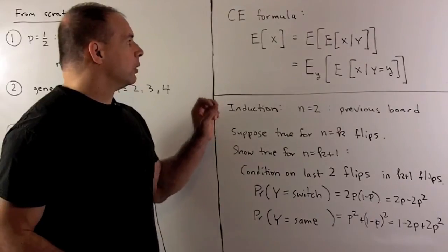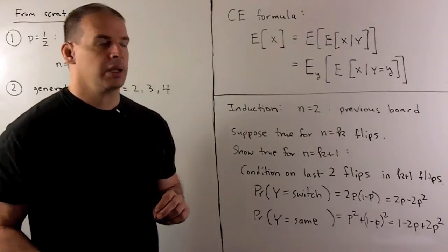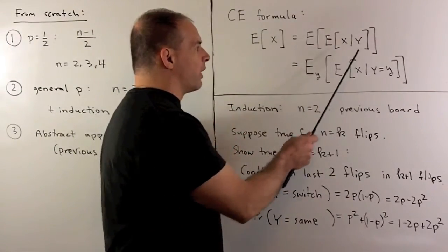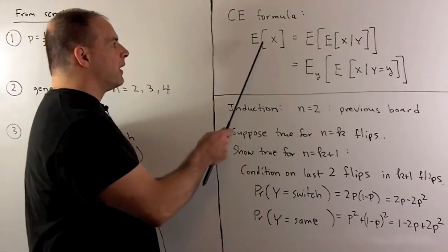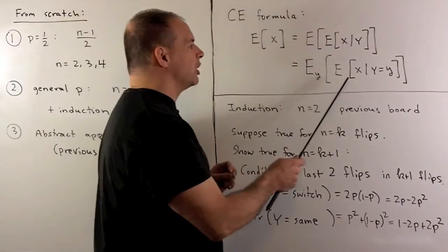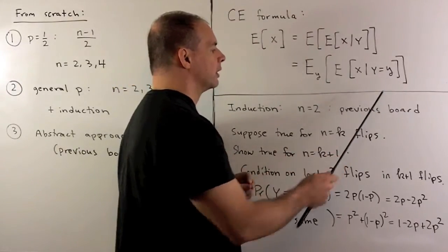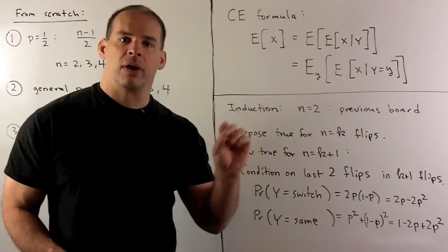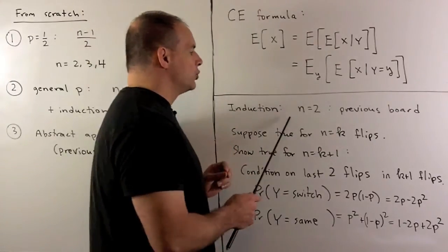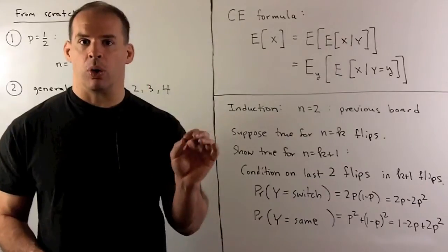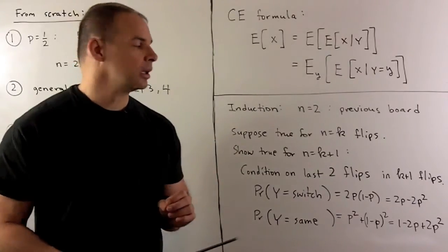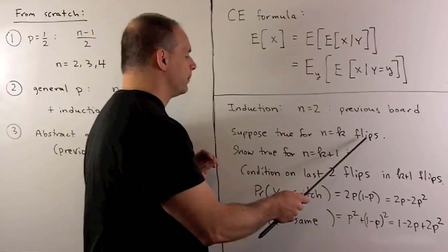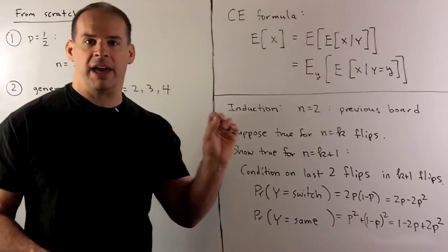Now, for the induction proof, we're going to use the conditional expectation formula. So, what we have is a random variable X. We're going to condition a random variable X with respect to a random variable Y. The expectation of a random variable X can be written as a double expectation on the conditioned random variable. Now, for induction, the induction is going to be on the number of flips to prove our formula. If we have two flips, we've shown that on the previous board. So, we have our base case. For the induction step, we're going to assume that our formula is true when we have K flips. And we'll use that to prove that the formula is true when we have K plus one flips.